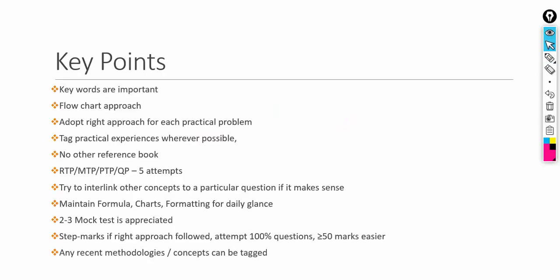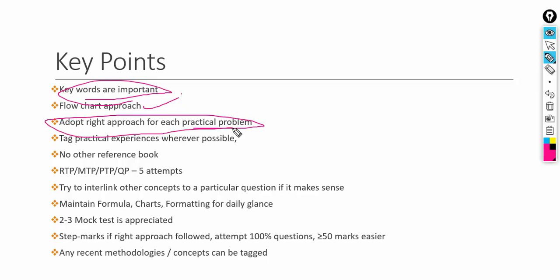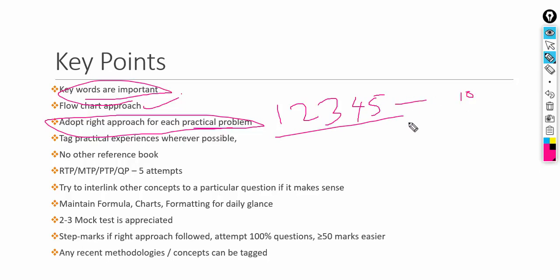For Paper 15, key points from my experience: keywords are very important — you should know what is cost analysis, what are quality costs, what is total quality management — note these in a sheet for revision before your examination. A flowchart approach can be followed. Adopt the right approach for each practical problem — for some practical problems, do not jump to conclusions; follow steps one, two, three, four, five, and so on. Each step is very important, and if there are ten steps, follow all ten.